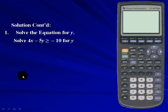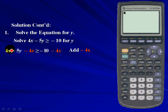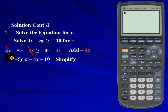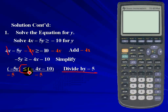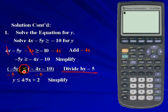Next, we solve the second equation for y. We add negative 4x to both sides so that the x variable cancels on the left, giving us negative 5y is less than or equal to negative 4x minus 10. We then divide by negative 5. Remember: when you divide or multiply by a negative number, you must reverse the inequality. Our inequality was greater than or equal to, and dividing by negative 5 reverses it, giving us y is less than or equal to four-fifths x plus 2.